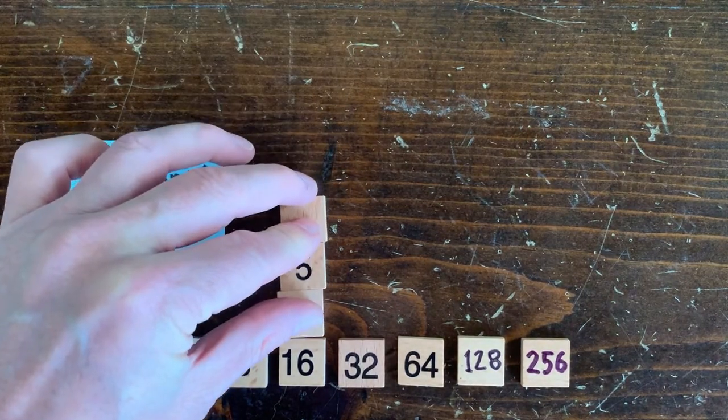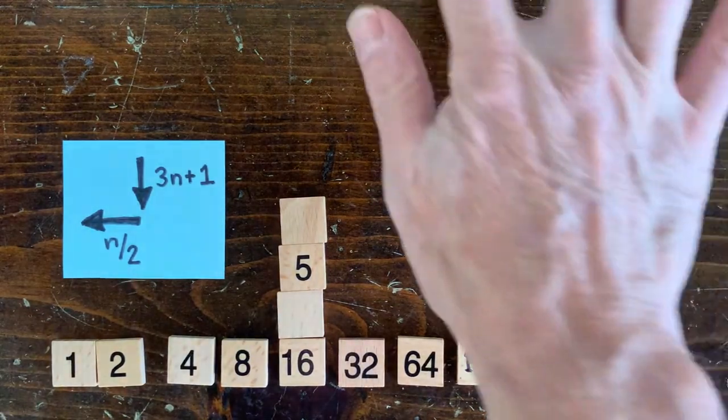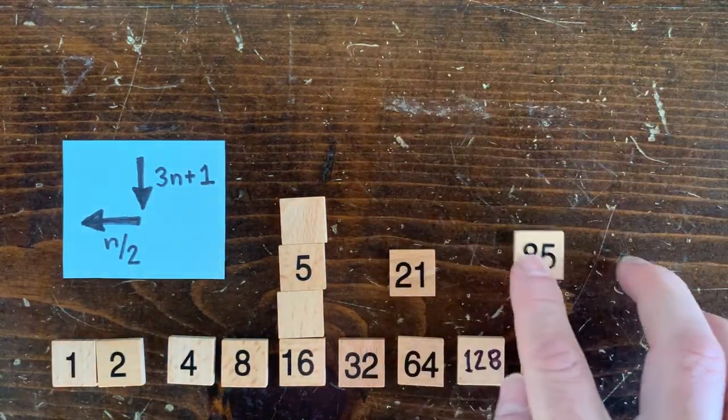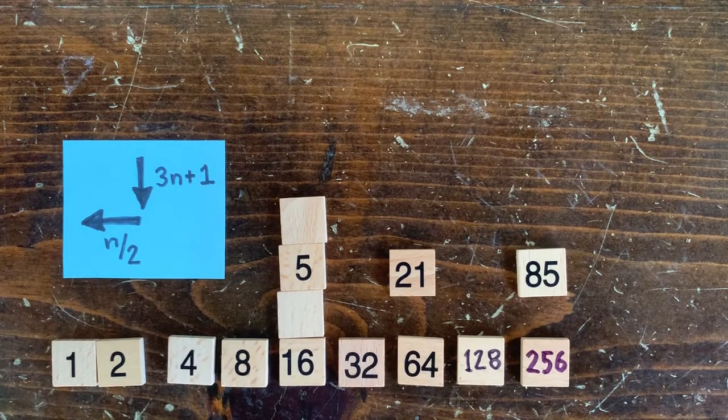So, let's add some odd numbers. Numbers like 5, 21, and 85 hit a power of 2 in a single step. So, they go to 1.